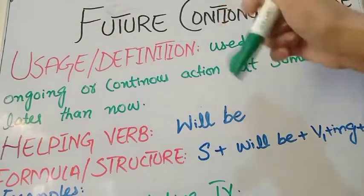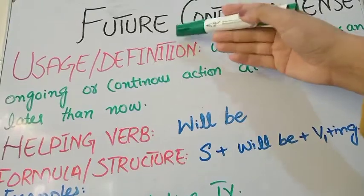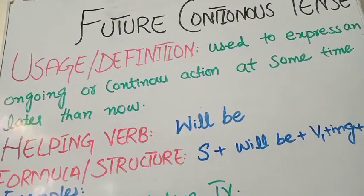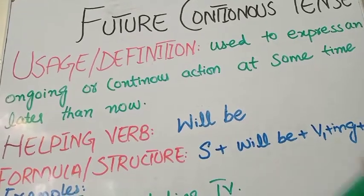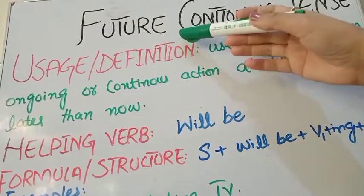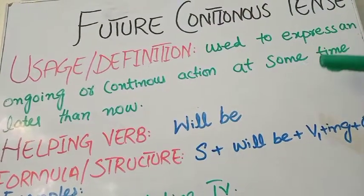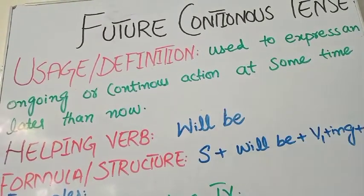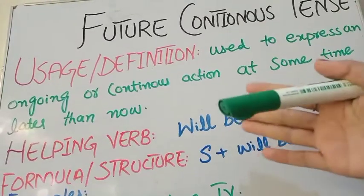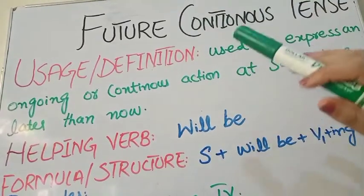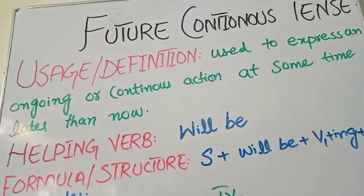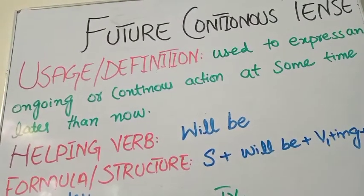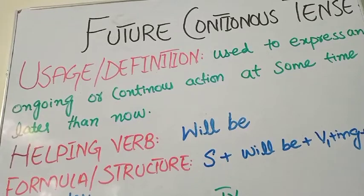As it is known as future, we mean time after the present. After the present moment, the date counts as future. Next hour, this evening, next morning, next week, next month, even a year — it can take a longer time. So this is all in the future. And by continuous, we mean that we talk about actions that are ongoing or continuous in the future.